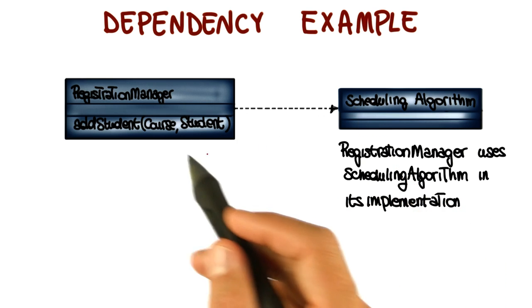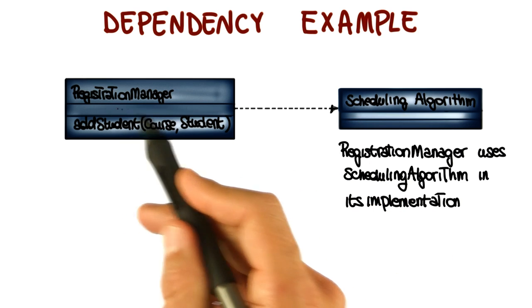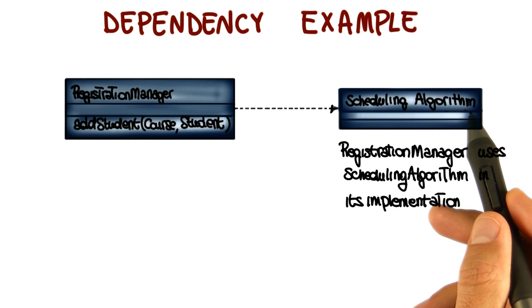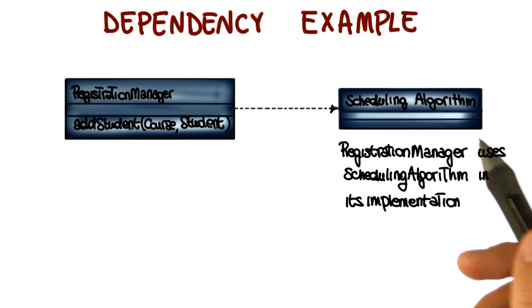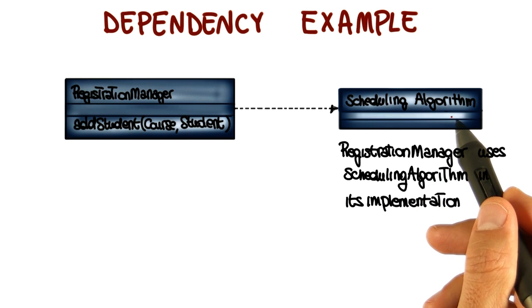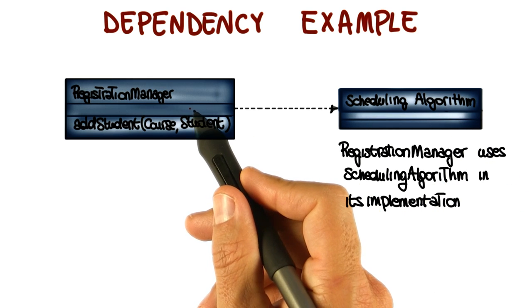And here, it's pretty clear why the registration manager is depending on the scheduling algorithm. It's because the registration manager uses the scheduling algorithm. And therefore, if the scheduling algorithm changes, the registration manager might be affected by that change.